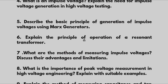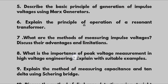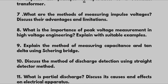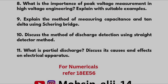Explain the principle of operation of a resonant transformer. What are the methods of measuring impulse voltages? Discuss their advantages and limitations. What is the importance of peak voltage measurement in high voltage engineering? Explain with suitable examples. Explain the method of measuring capacitance and tan delta using a Schering bridge. Discuss the method of discharge detection using the straight vector method. What is partial discharge? Discuss its causes and effects on electrical apparatus.